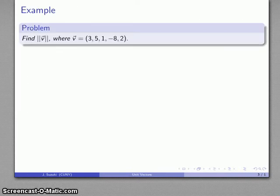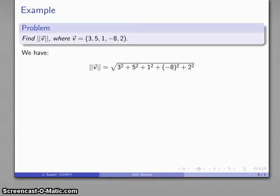So, for example, let's take a look at the magnitude of the vector V, where V is (3, 5, 1, -8, 2). Note that this is a vector in five-dimensional space. No problem. We're not trying to draw this, and so we can calculate our norm. It's just going to be the square root of the sum of the squares of the individual components. And after all the dust settles, we find that that magnitude is square root of 103.